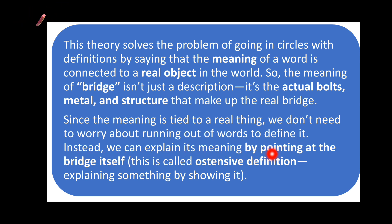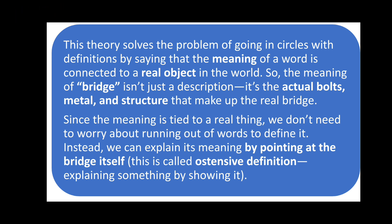This is called ostensive definition — explaining something by showing it. آپ کہتے ہیں 'star' آپ کہتے ہیں 'tree' آپ point out کرتے ہیں جو real world میں exist کرتے ہیں — آپ کہتے ہیں 'mountain,' 'girl,' 'child,' 'classroom,' 'pen,' 'bottle,' 'cup,' 'spoon.' All these are things that exist in the real world. Since the meaning is tied to a real thing, we don't need to worry about running out of words to define it — we can explain meaning by pointing at the thing itself.